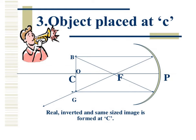Object placed at C. When the object is at C, then the image will be formed at C because the rays will intersect at C.